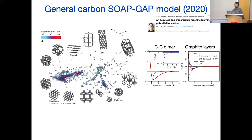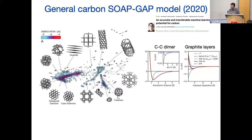Here's an example from my group showing the delicate details that go into building one of these generic potentials. For carbon — a material of interest to many — we've built a database including all forms of carbon we could think of: diamond, amorphous carbon, graphite, various low-density structures, nanotubes, buckyballs, everything. This image shows in a two-dimensional embedding the density of our database — most data around diamond and amorphous carbon, and another set around these small fullerene rings.